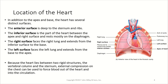The base is going to be formed by the atria — the upper chambers of the heart — and mostly by the left atrium specifically. The anterior surface of the heart is deep to the sternum and the ribs. The inferior surface is between the apex and the right surface, and it rests mostly on the diaphragm. The right surface faces the right lung, and the left surface faces the left lung, extending from the base to the apex.